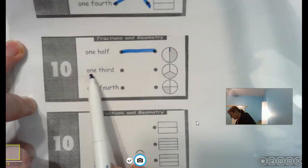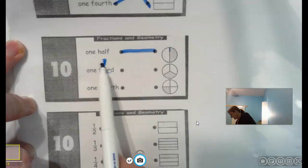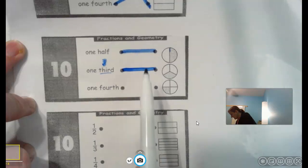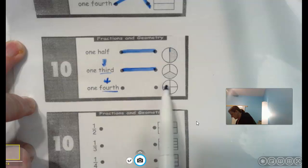One third. Remember, third means three. This one right here is cut into three equal parts. And one fourth. Remember, fourth equals four. And this one right here is cut into four equal parts.